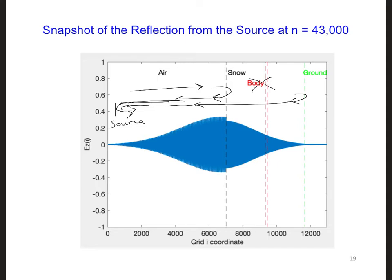Here's a snapshot of the EZ fields in the grid after 43,000 time steps. This is the retro-reflection propagating to the right. So the question is: is this what we want? Is this what would happen in real life?